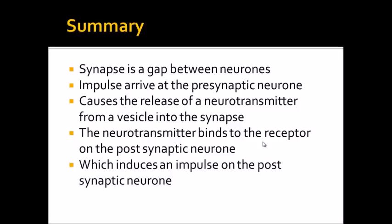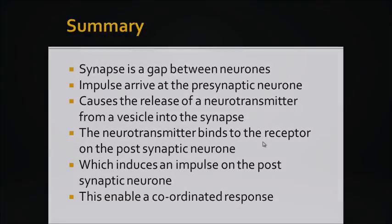This then induces an impulse on the post-synaptic neuron and therefore, the impulse can then continue on to the effector or to its target cells. This enables a coordinated response. What this means is that certain cells or certain effectors can be targeted and not all at once. The fact that you have gaps between the neurons means that some effectors can be targeted and stimulated and others cannot.